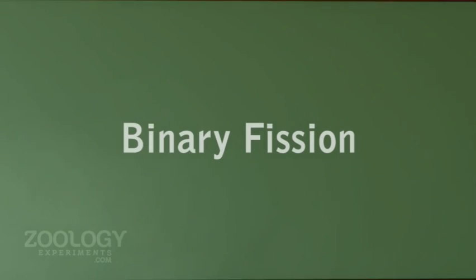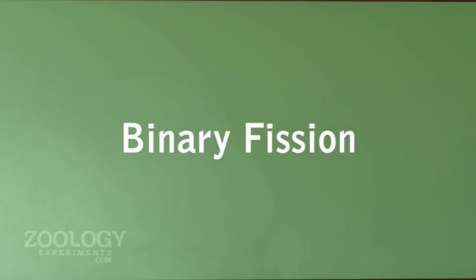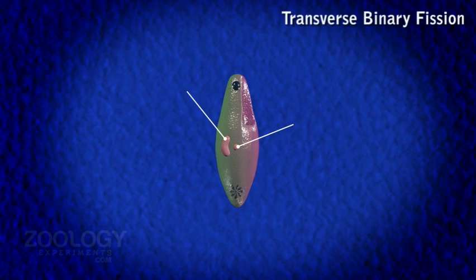Transverse Binary Fission. When favorable conditions are present, paramecium shows transverse or horizontal binary fission, which is at right angles to the longitudinal axis of the body.